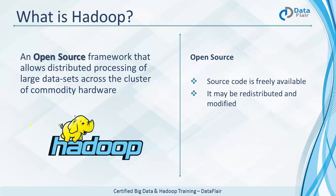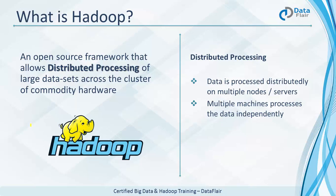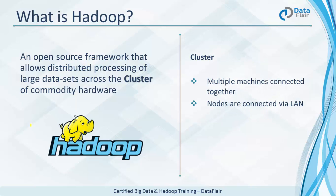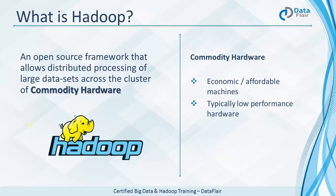You can even sell it under your own name. Distributed processing means the data is processed distributedly on multiple nodes, multiple servers, multiple machines that process the data independently. For example, in a hundred-node cluster, all hundred nodes process the data distributedly and independently. A cluster means multiple machines connected together via LAN. Commodity hardware refers to low-end, affordable hardware — typically low-performance hardware like an 8-core processor with 16 GB RAM.